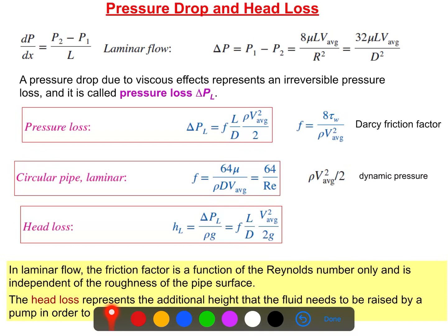We'll discuss the pressure drop and head loss for steady laminar flow. Pressure drop is one of the important quantities needed for engineering applications because it is related to the fan, pump, or pumping power requirements. We need to know how to determine the pressure drop or head loss of the system. The pressure changes along the x-axis, so dp/dx is constant — meaning the rate of change of pressure along the x-axis is constant.